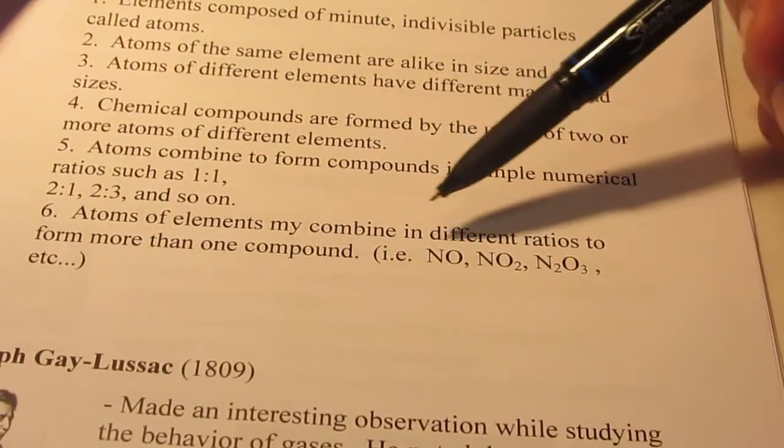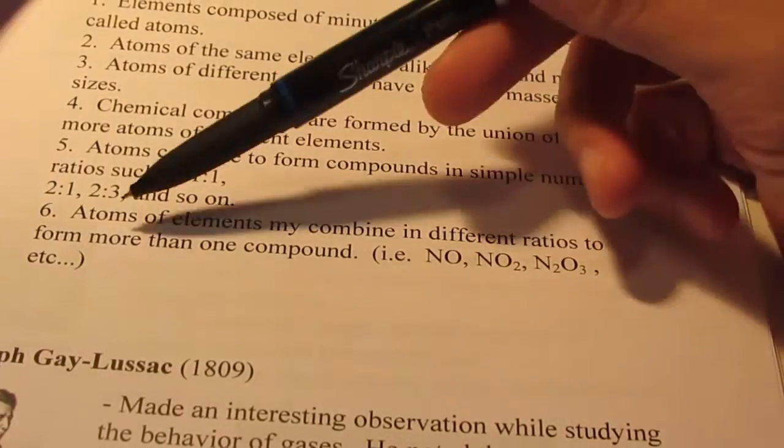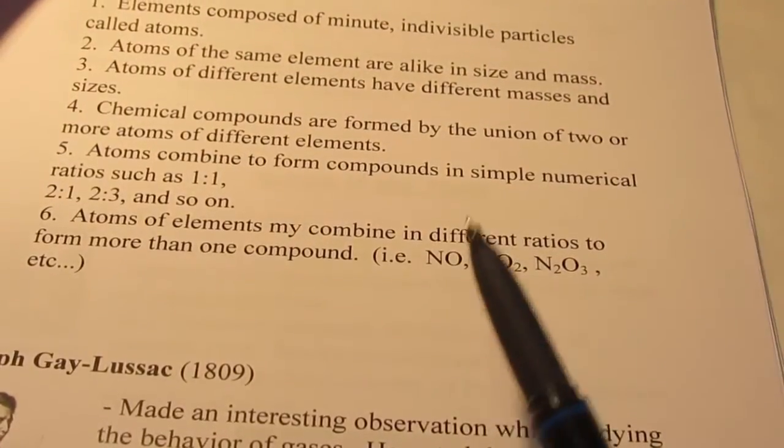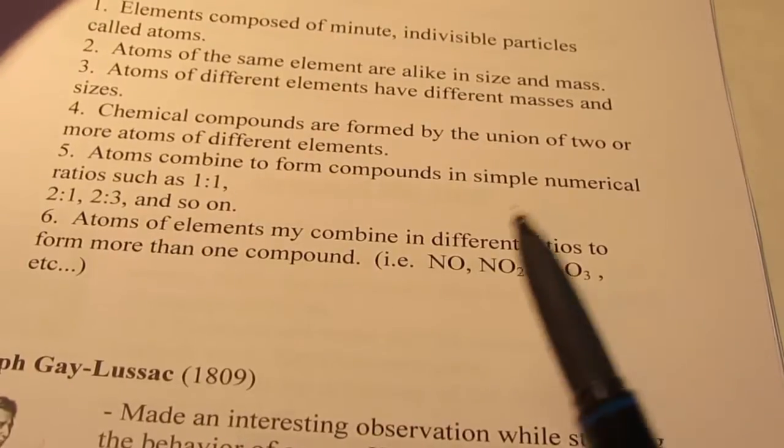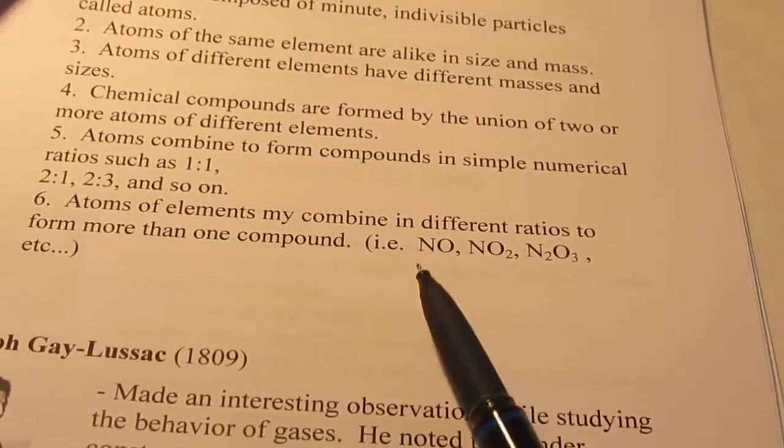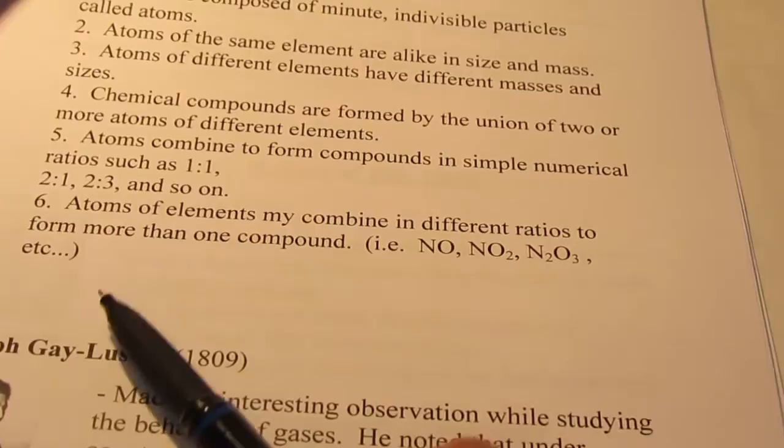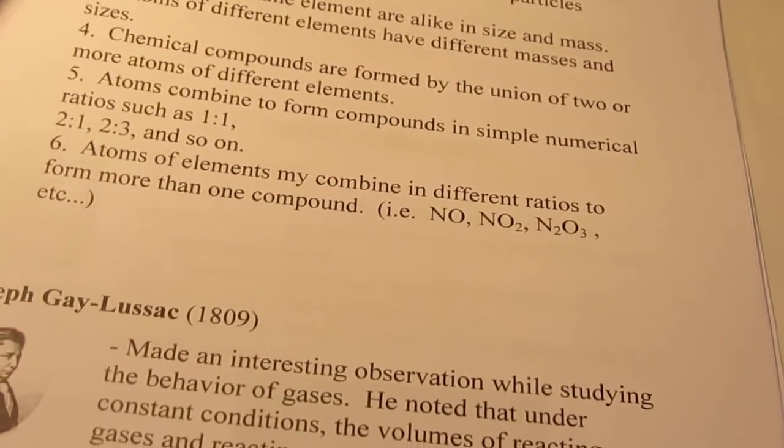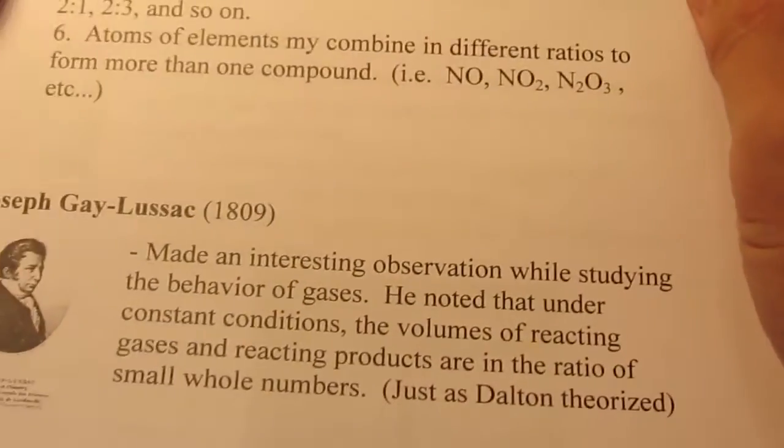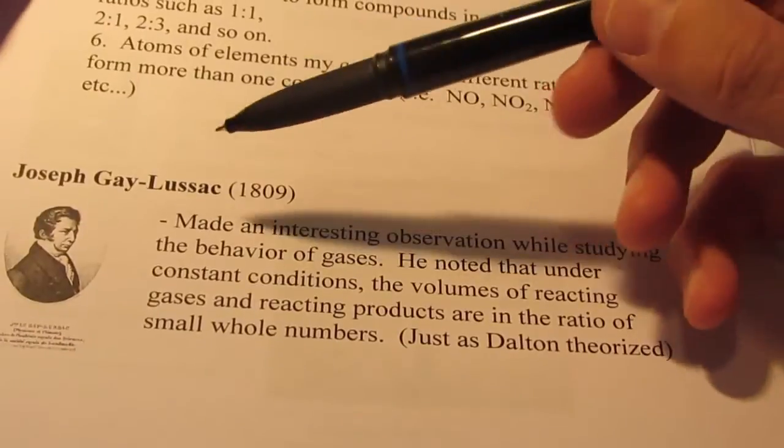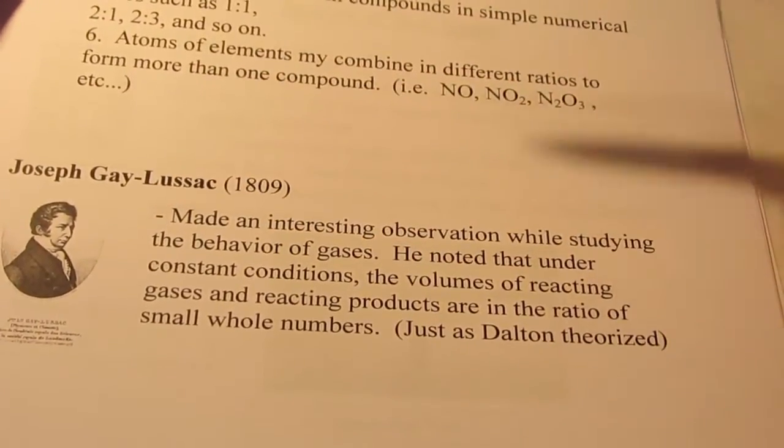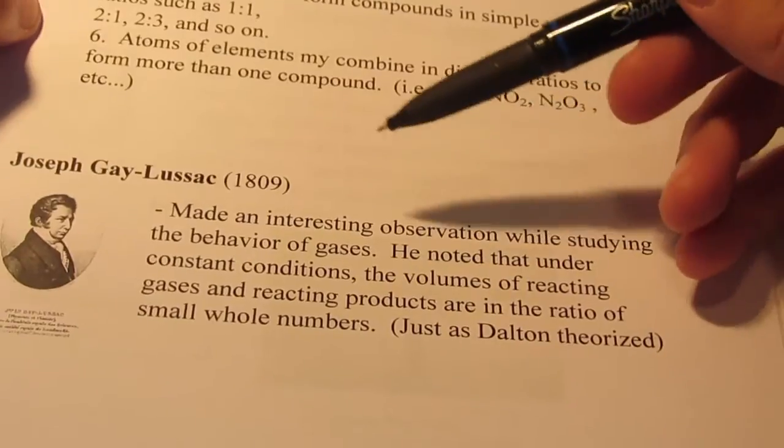And atoms of elements may combine in different ratios to form more than one compound, like our iron and oxygen, our carbon and oxygen example we just spoke of, or nitrogen and oxygen come together in many different ratios. To wrap this up for the day, we'll just talk about Joseph Gay-Lussac and one other individual that lent credibility to Dalton's theories.